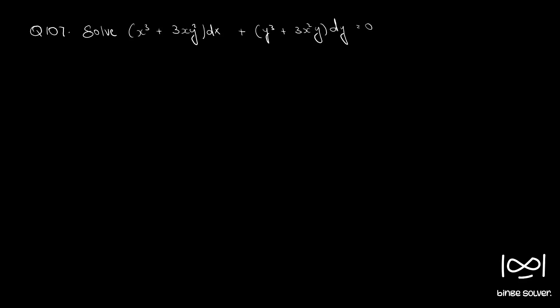Question 107: Solve (x³ + 3xy²)dx + (y³ + 3x²y)dy = 0. First, let's rearrange the terms to get dy/dx. Here dy/dx = −(x³ + 3xy²) / (y³ + 3x²y). If you check, you can see that taking x³ out from the numerator and y³ from the denominator, we can make this into a function of y/x.